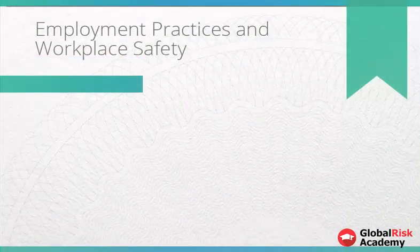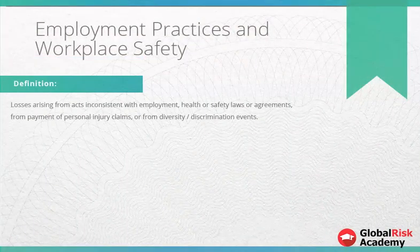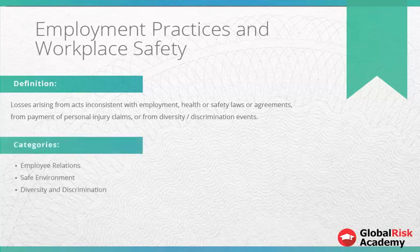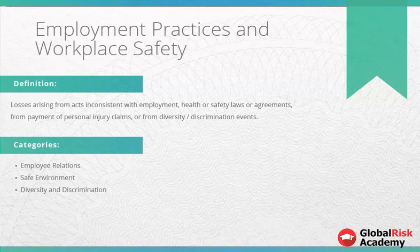Employment practices and workplace safety is a risk defined as losses arising from acts inconsistent with employment, health or safety laws or agreements, from payment of personal injury claims, or from diversity and discrimination events. A safe environment risk may occur as a general liability or employee health and safety rule events which lead to workers' compensation. This type of event may also include diversity and discrimination of any type.